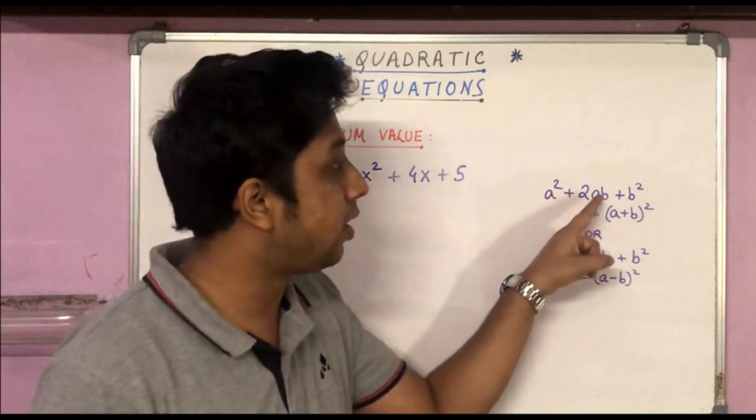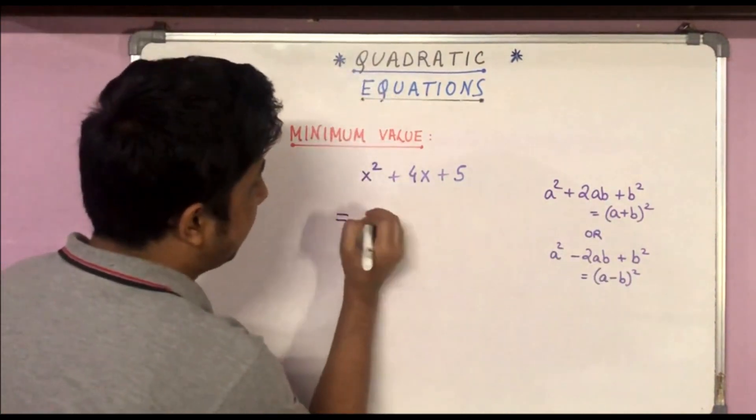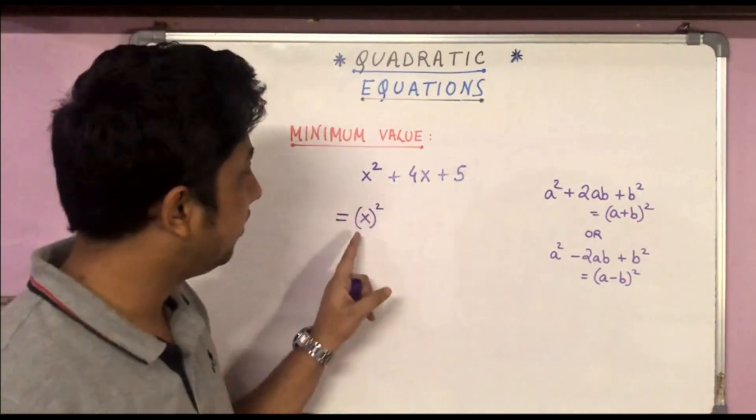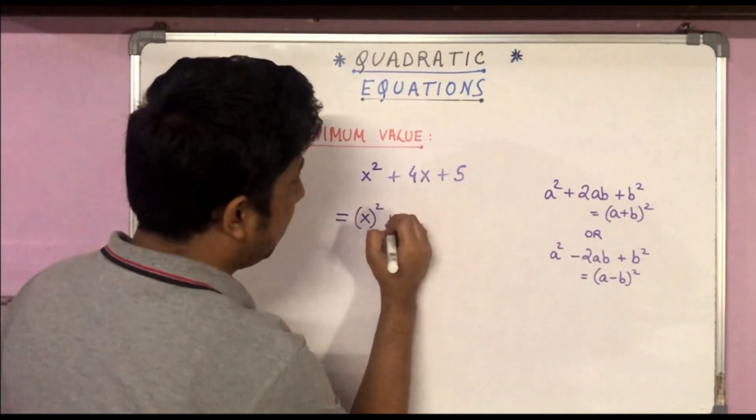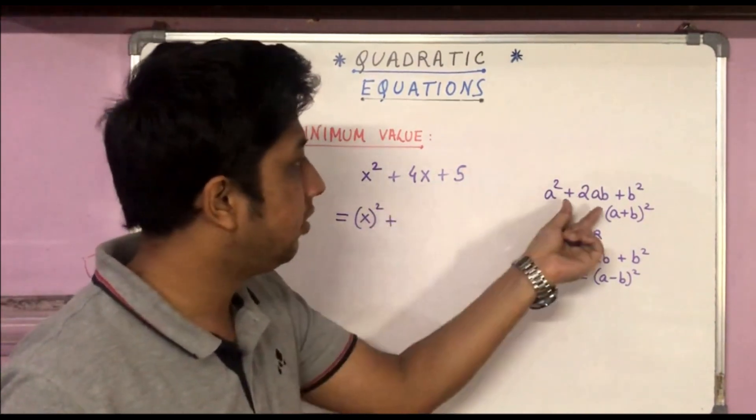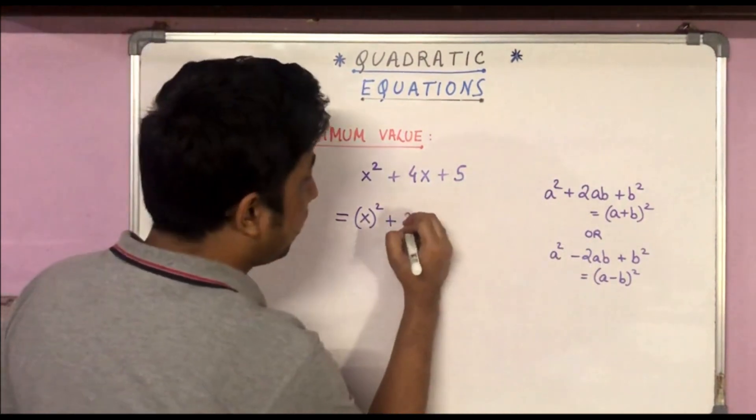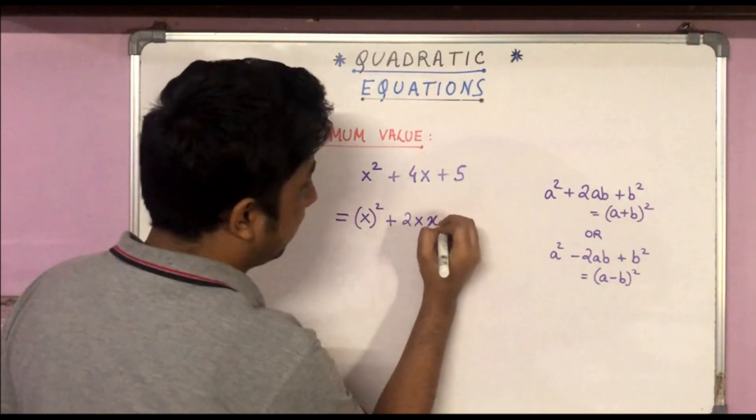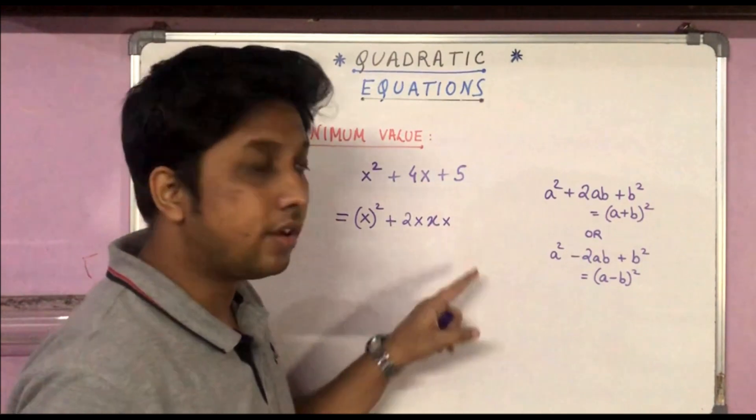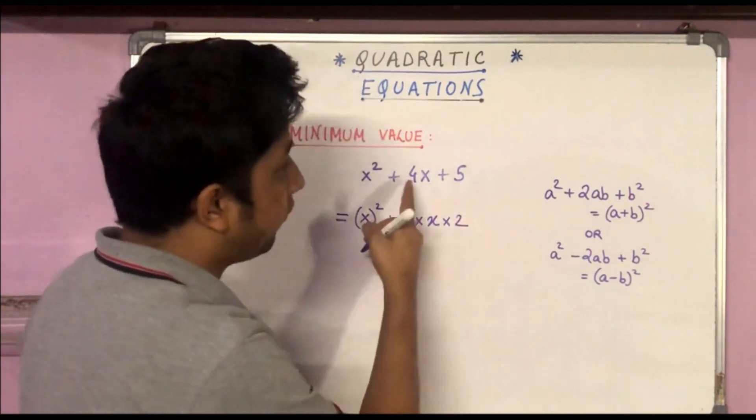Now the first term can be expressed as something squared easily, x² as 2ab, where a is nothing but x in this case. So 2 times x times, now what we can write here is 2, so that this becomes 2 times x times 2, which is 4x.